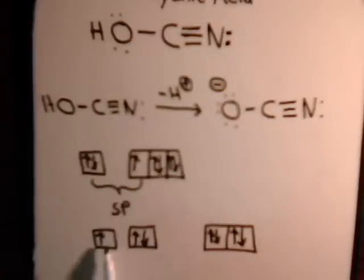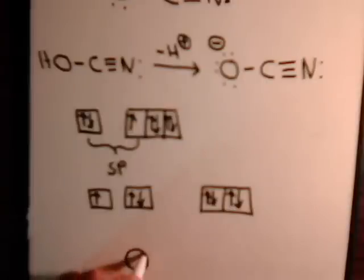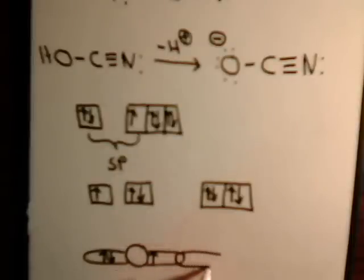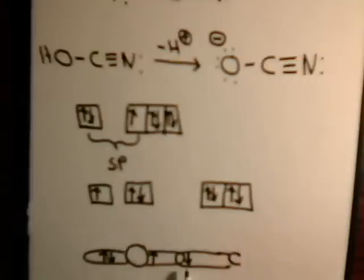Remember these orbitals are 180 degrees apart. So for the oxygen atom: an sp orbital, an sp orbital with a lone electron pair, a single electron — and then the carbon atom, which is of course also sp hybridized, has a single electron pair. These two electron pairs are shared right here, where the sp orbitals overlap to form the sigma bond.